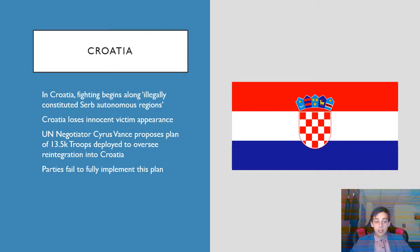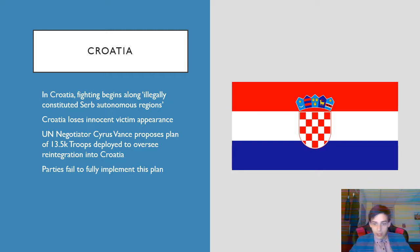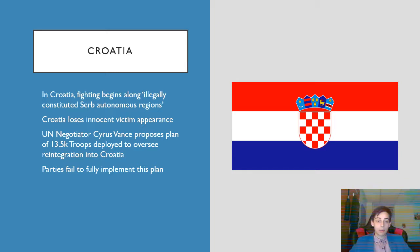Something to mention about Croatia is the Vance Plan, where 13,500 troops would be stationed in Croatia to allow reintegration of the Serbian part of Croatia. This plan was never fully implemented because Croatian leaders could not agree to it.